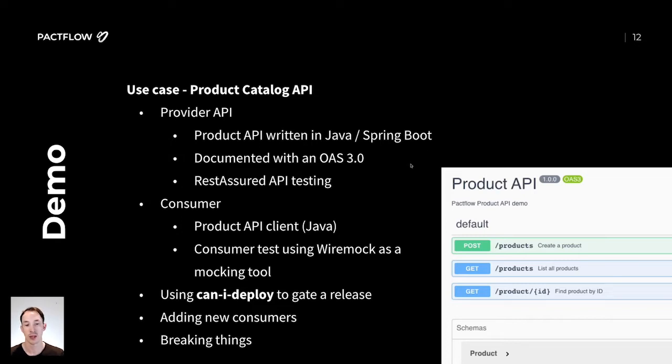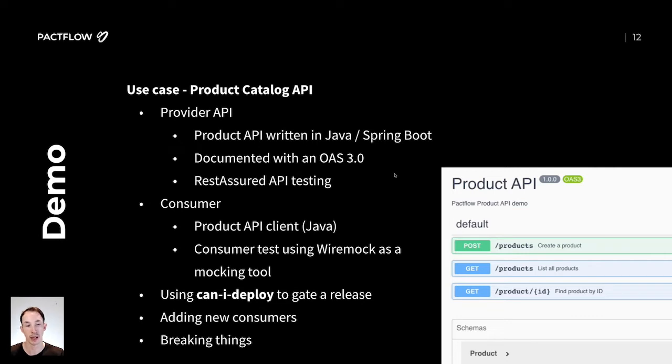We're then going to use Can I Deploy to gate release, and we're going to see what happens when we break things and how Pactflow will detect the breaking changes and prevent you from breaking production.